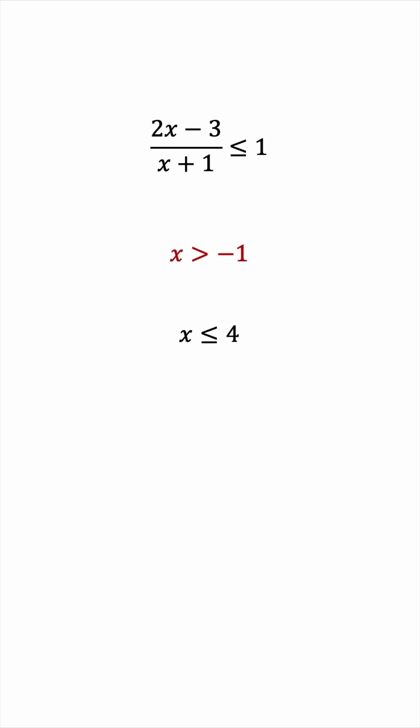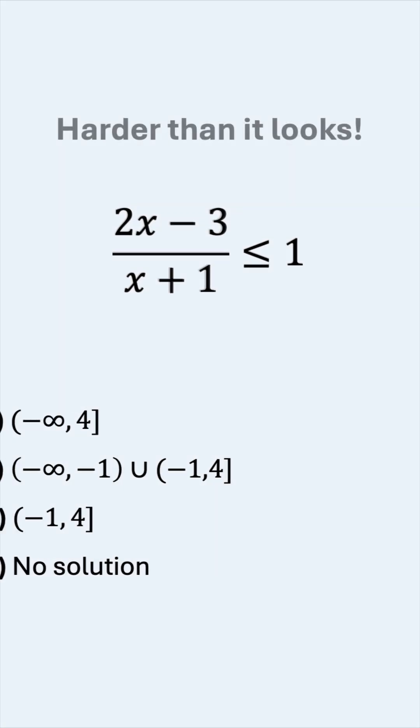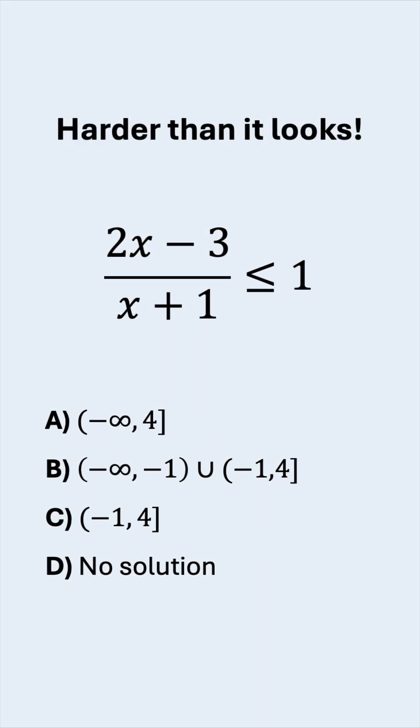So now the region actually gets smaller. It's only from negative 1 to 4, excluding negative 1, but including 4. So the correct answer is actually not b, but c.